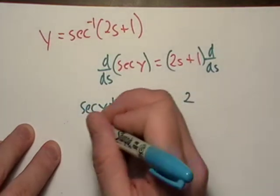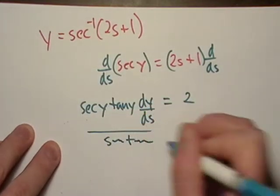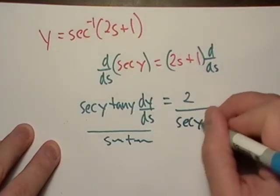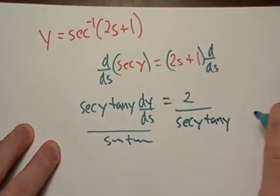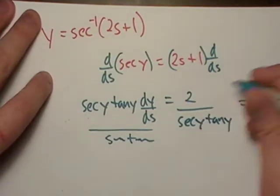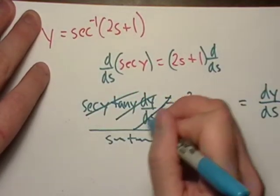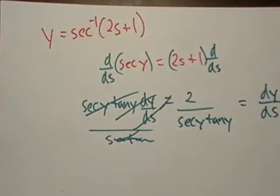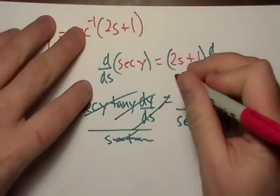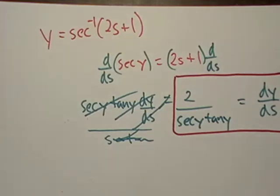Okay, so the next thing I'm going to do is I'm just going to divide both sides by secant y tangent y. And it looks like this is going to give me dy/ds. So, I'm just going to cross this out so there's no confusion. And I'm going to put a little box around it because there's our answer. Really, that is our answer.